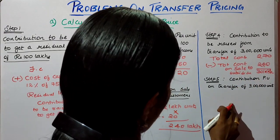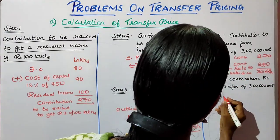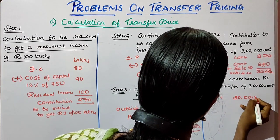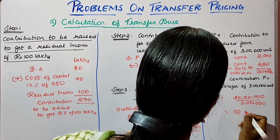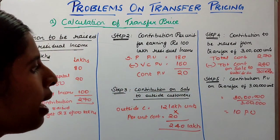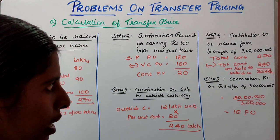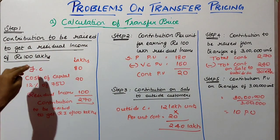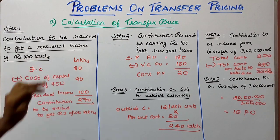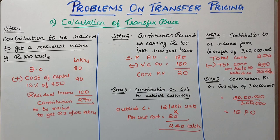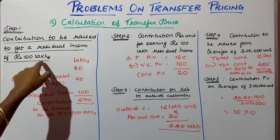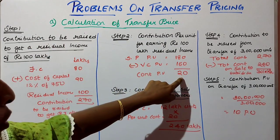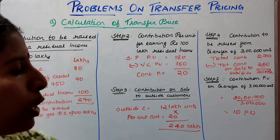Dividing 30 lakhs by 3 lakh units gives a contribution per unit of 10 on transfer to Beta division. So when the company wants to earn a residual income of 100 lakhs, it should earn a contribution of 20 per unit from outside customers and 10 per unit on the internal transfer.